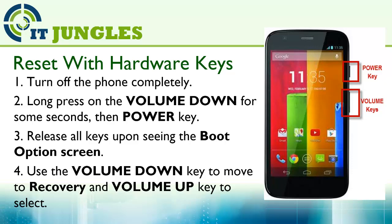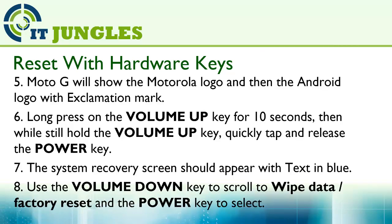Use the volume down key to move to recovery, and the volume up key to select. The Moto G will show the Motorola logo, and then the Android logo with an exclamation mark. Long press on the volume up key for 10 seconds. Then, while still holding the volume up key, quickly tap and release the power key.